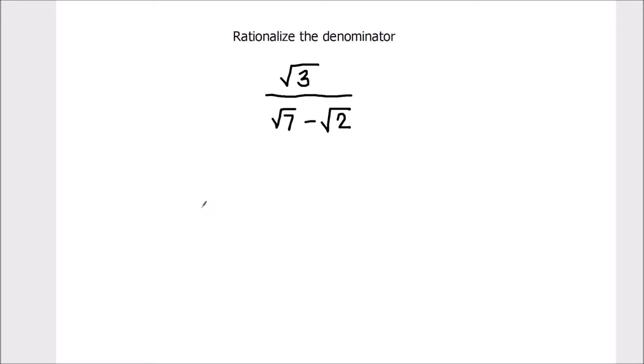In elementary algebra, root rationalization is a process by which radicals in the denominator of an algebraic fraction are eliminated. That means we are going to eliminate the square root signs in the denominator by using the process of rationalization.